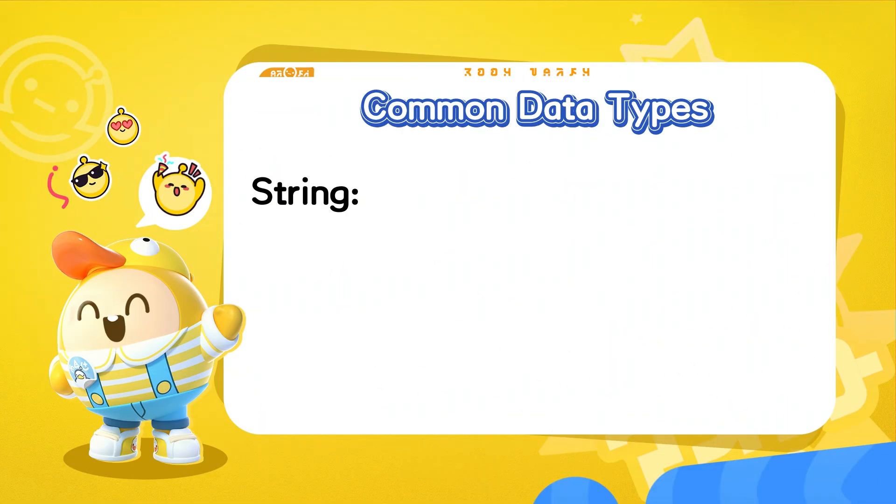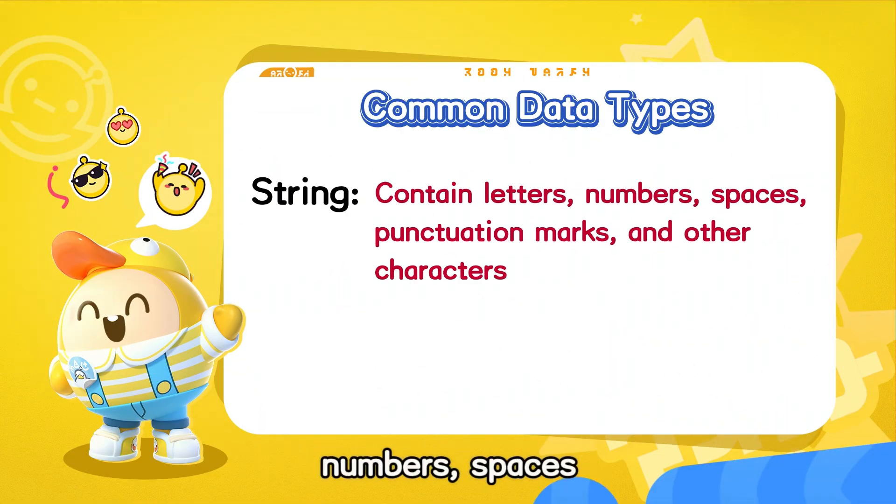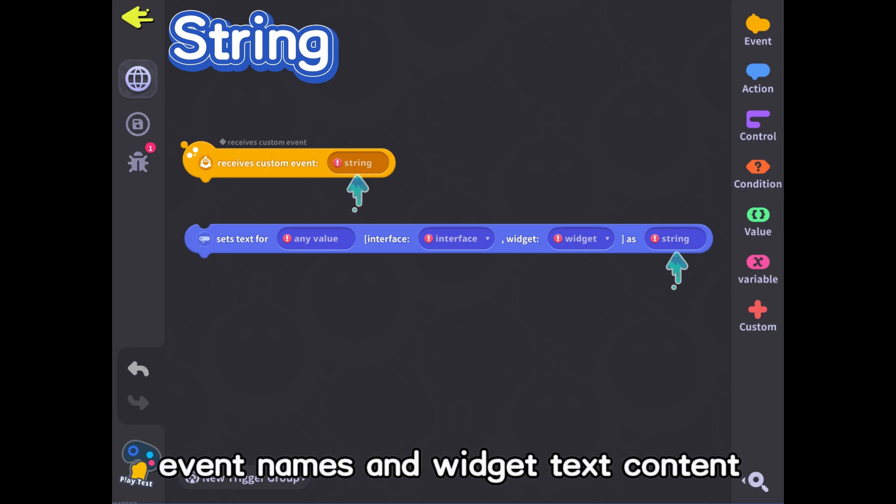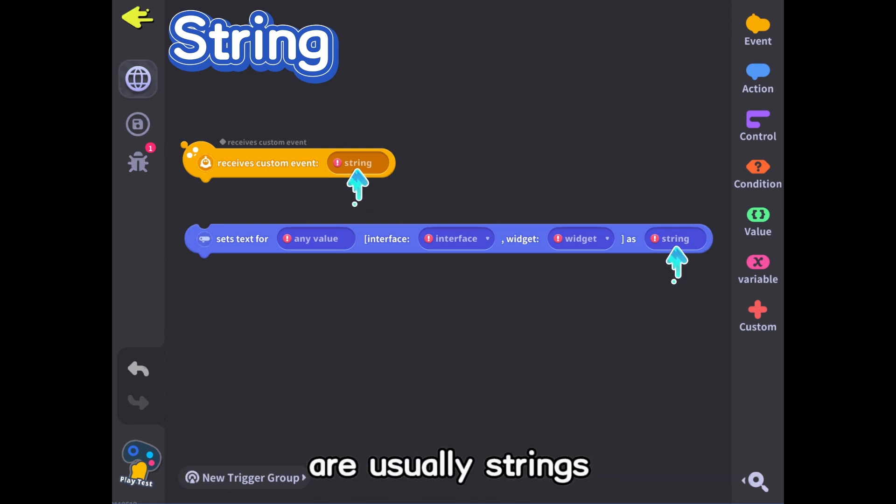String can contain letters, numbers, spaces, punctuation marks, and other characters, used to represent text data. In Eggie code, event names and widget text content are usually strings.